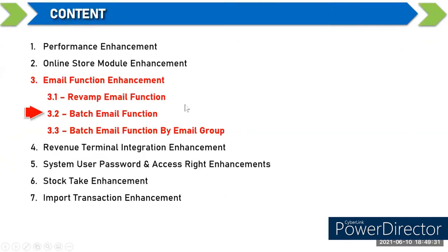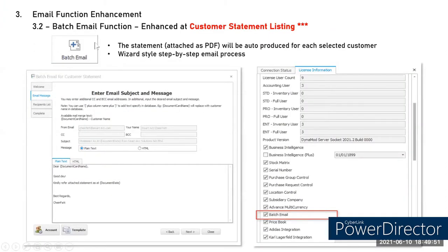The next feature is the Batch Email function, which has two types. The first type is batch email by customer. This feature currently supports Customer Statement Listing only, which is why it was marked with three stars earlier. A separate license must be purchased for the batch email function — contact your salesperson after the webinar for pricing.